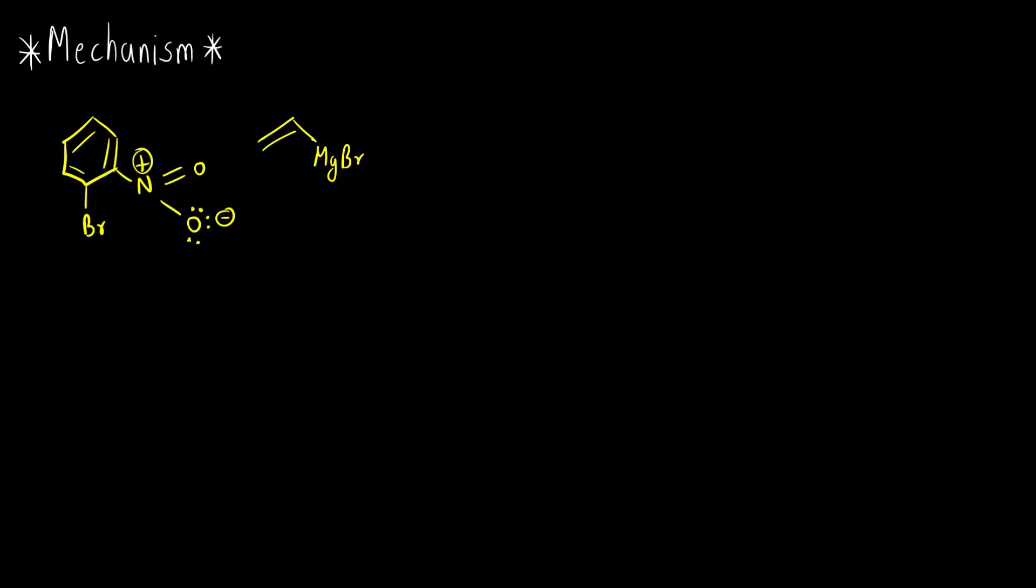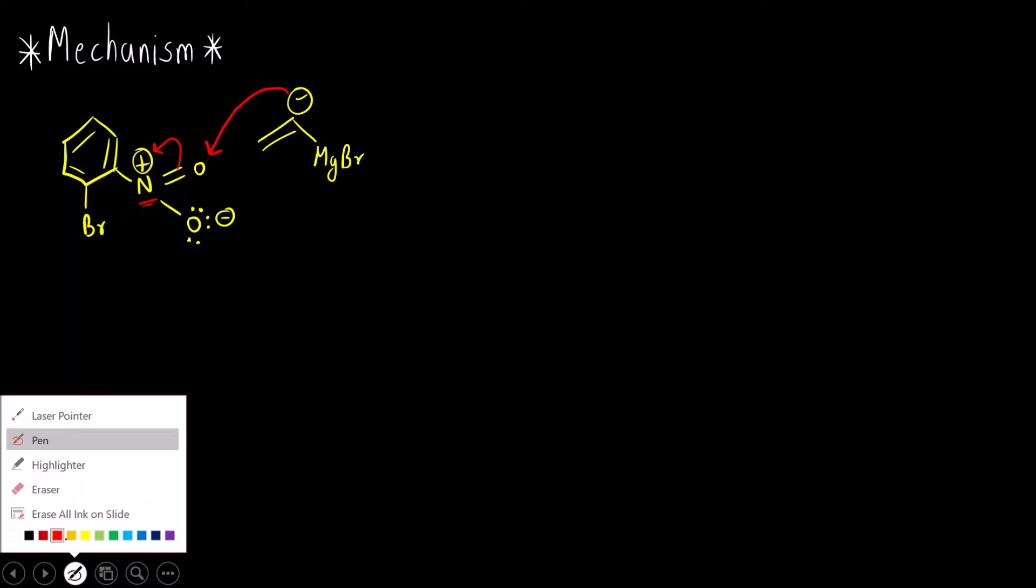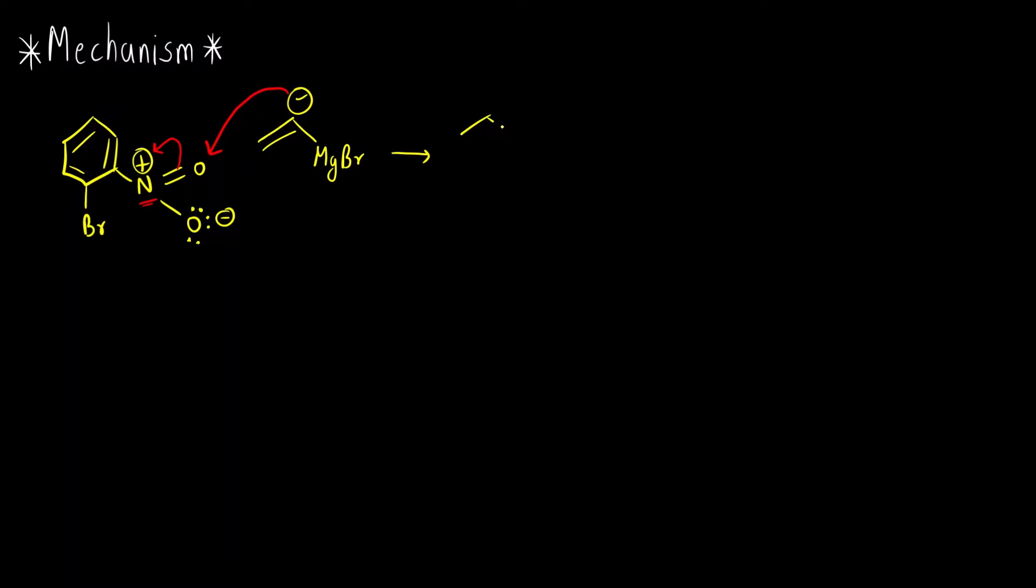So we know in RMgX this is negative charge. Okay, so what will happen here is this will attack the oxygen. And this will open up like this because positive charge on electronegative atom is not stable. So what do we get is benzene ring and Br remains as it is. Here we have nitrogen.